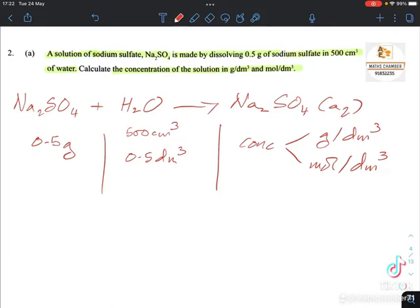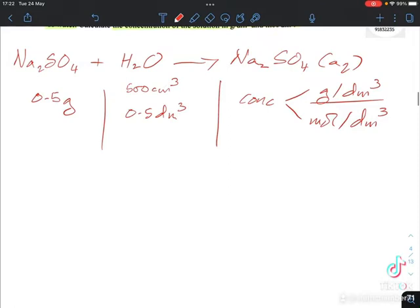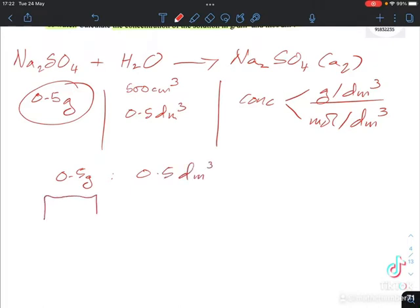It's very easy. Let's find the gram per cubic decimeter first, the concentration in terms of gram per cubic decimeter. It's 0.5 gram dissolving in 0.5 cubic decimeter. If you want to find the mass in terms of 1 cubic decimeter, obviously since 0.5, 0.5, it's 1 gram.